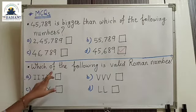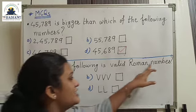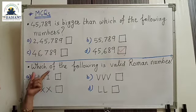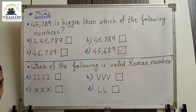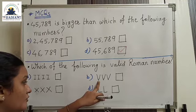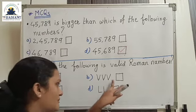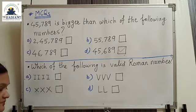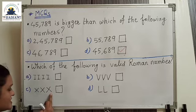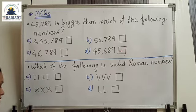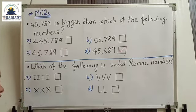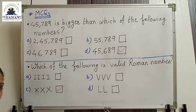Now: which of the following is a valid Roman number? Option A has R repeated 4 times — we can't repeat R more than 3 times, so A is invalid. Option B — we can't repeat V, so B is not correct. Option C: XXX means 10 plus 10 plus 10 equals 30 — this is correct. Option D has L repeated — we can't repeat L. So our answer is C.